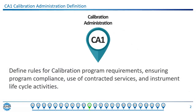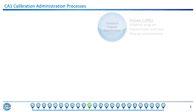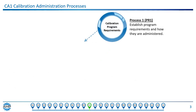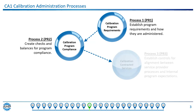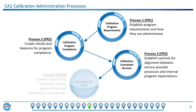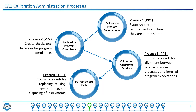The first function, Calibration Administration, defines the rules for calibration program requirements, ensuring program compliance, use of contracted services, and instrument lifecycle activities. Just like every AMP function, the Calibration Administration function contains four processes: calibration program requirements, calibration program compliance, calibration contracted services, and instrument lifecycle.